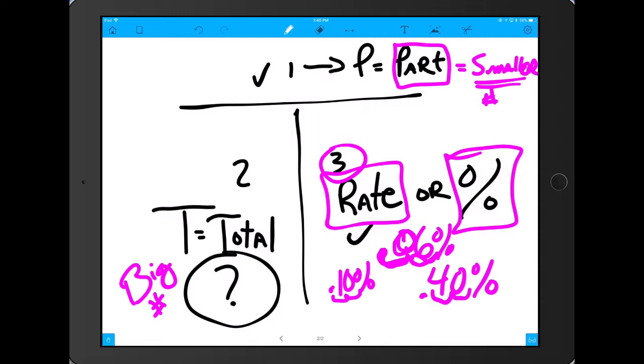So just remember, we have our three slots. On top, we'll always be part, and think smaller number. Number two is the T for total, and I want you to think the bigger number. And then rate or percent is always going to be converted to decimal form. So you want to move that decimal place two places to the left. And if you have a 6, or a 7, or a 5, you're going to have to put a zero. But once you get to 10 and above, you will move that over and it will be 0.10, 0.40.